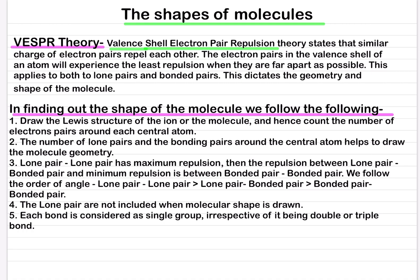Lone pair-lone pair has maximum repulsion, then the repulsion between lone pair and bonded pair is intermediate, and then minimum repulsion is between bonded pair and bonded pair. We follow the order of angle: lone pair-lone pair is greater than lone pair-bonded pair, which is still greater than bonded pair-bonded pair.